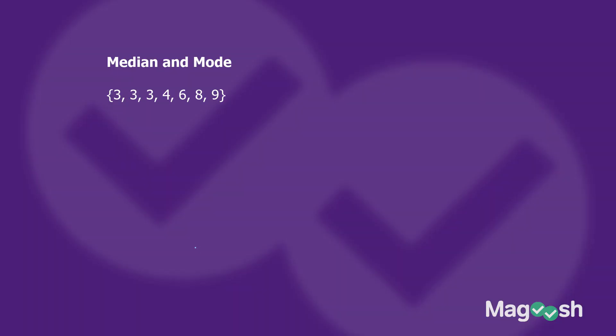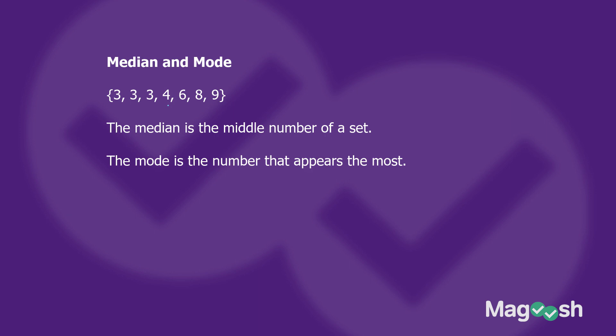Let's dive into the difference between median and mode starting with these numbers: 3, 3, 3, 4, 6, 8, 9. The median is the middle number of the set. We have seven numbers — three on each side — so the median is that middle number, which is 4. The mode, on the other hand, is the number that appears the most; in this case, three appears three times, so the mode is 3. The median is 4 and the mode is 3.